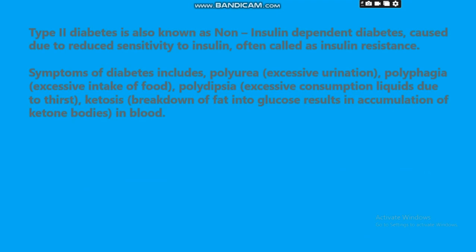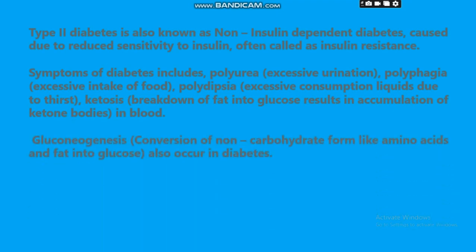Symptoms of diabetes include polyuria (excessive urination), polyphagia (excessive intake of food), polydipsia (excessive consumption of liquids due to thirst), ketosis (breakdown of fat resulting in accumulation of ketone bodies in blood), and gluconeogenesis (conversion of non-carbohydrate sources like amino acids and fat into glucose).